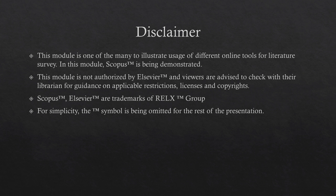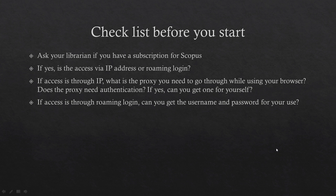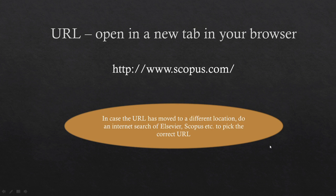As usual, we must go through a checklist before we start a literature survey using Scopus as a tool. We must ask whether we have access to Scopus — please ask your librarian if you have a subscription. If yes, is access via an IP address or a roaming login? If through IP address, do you need to access it through a proxy, and if so, does it need a username and password? If access is through a roaming login, you must obtain the username and password to login through the portal.